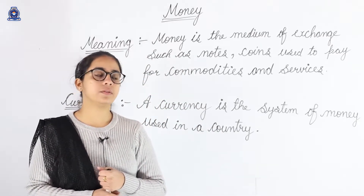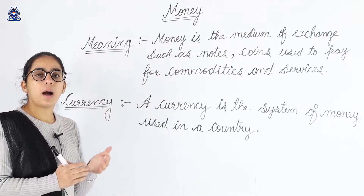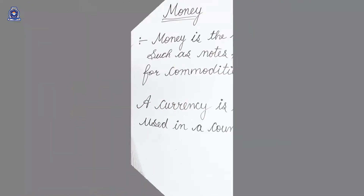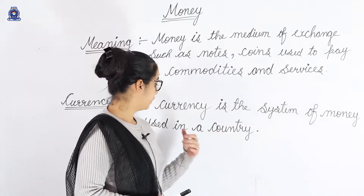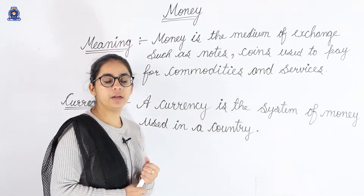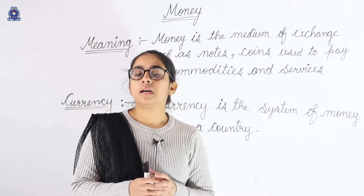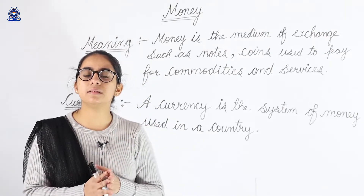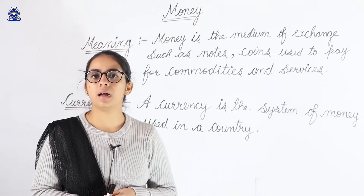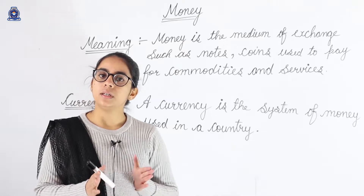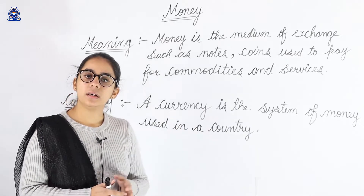So let's start with our chapter. Firstly we'll understand the meaning of money. And next, a currency is the system of money used in a country. Alag-alag countries ki alag-alag currency hoti hai. India ki currency kya hai? As you know, rupee and paisa is the currency of India.